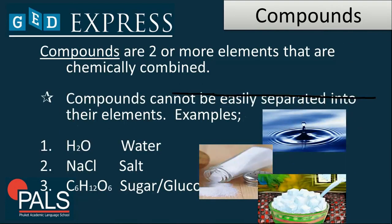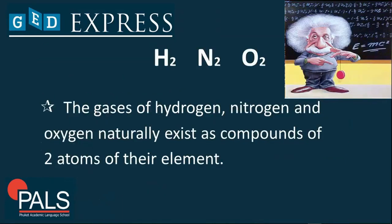Now we have compounds. A compound is mainly a combination of two or more elements that are chemically combined. Compounds cannot be easily separated into their elements — such as water, salt, and sugar or glucose. The gases hydrogen, nitrogen, and oxygen naturally exist as compounds of two atoms of their elements.